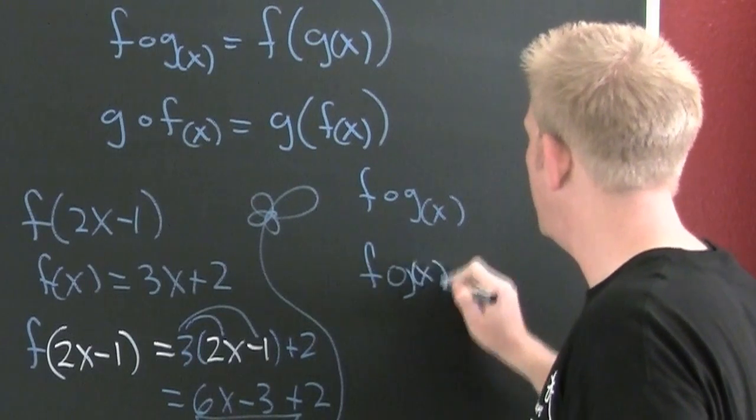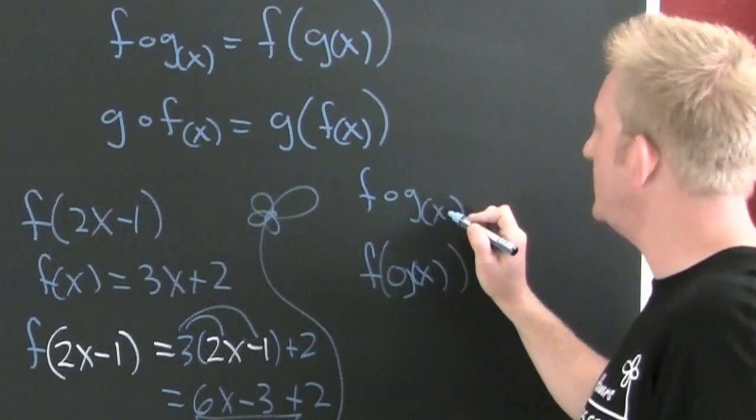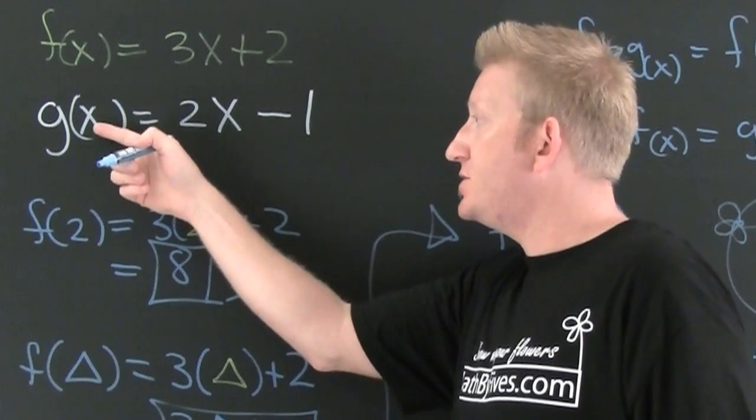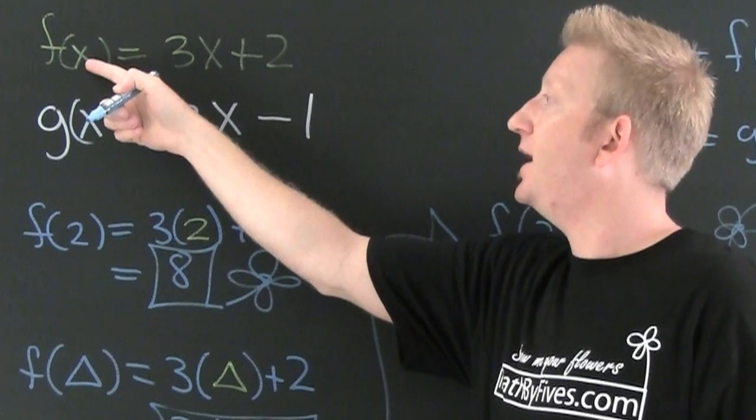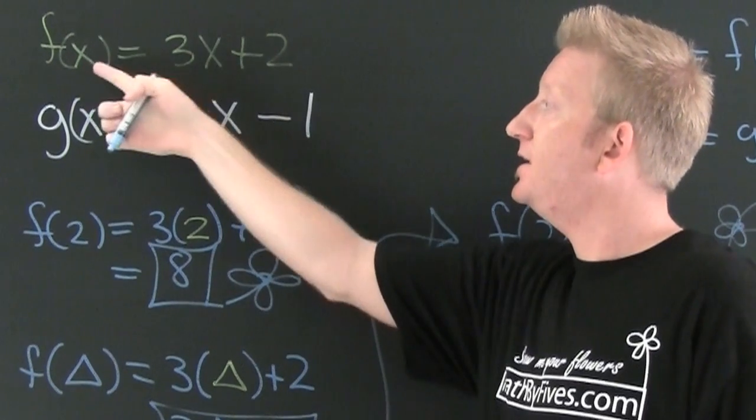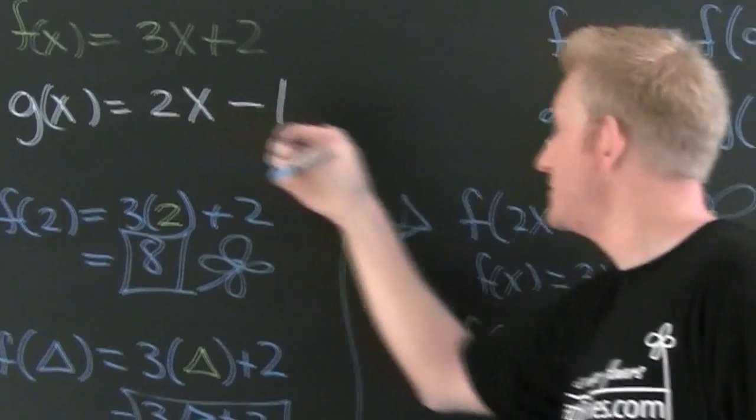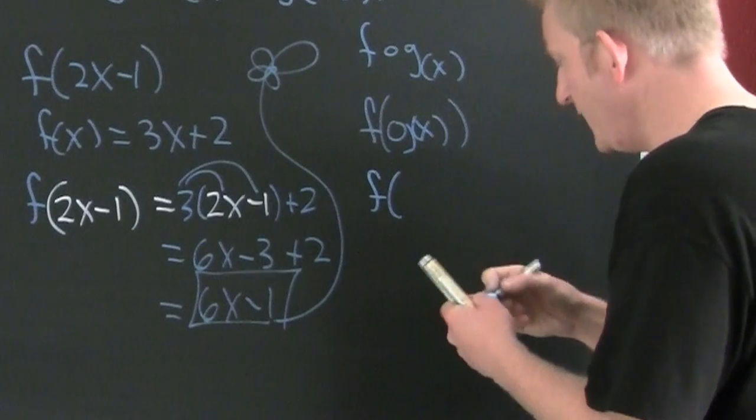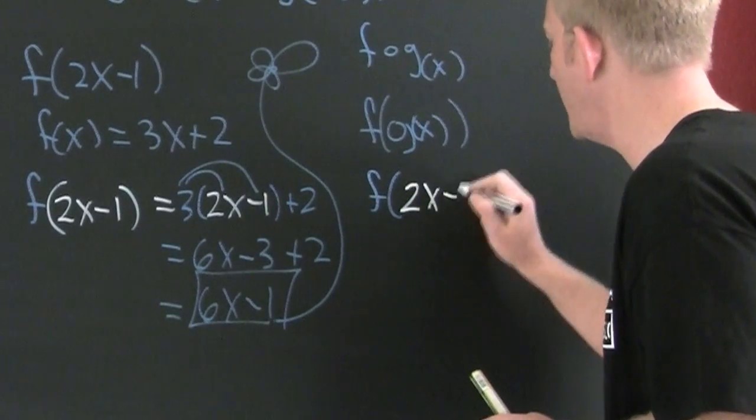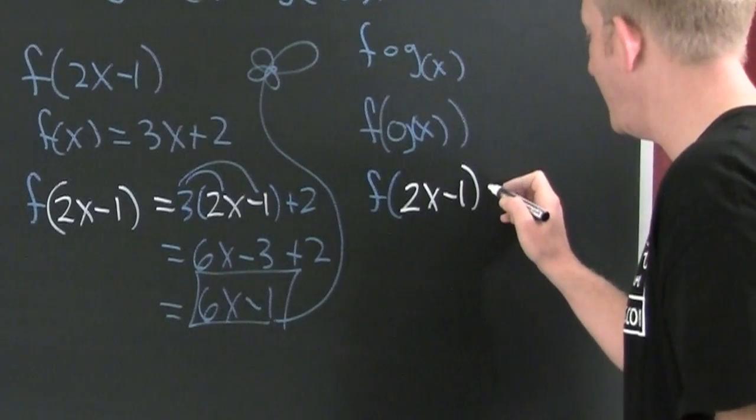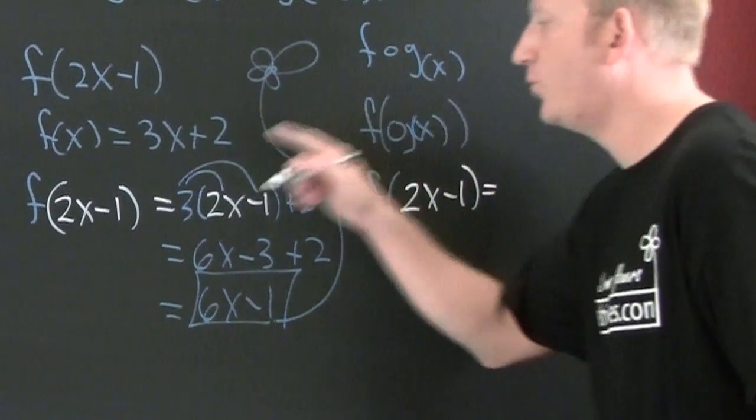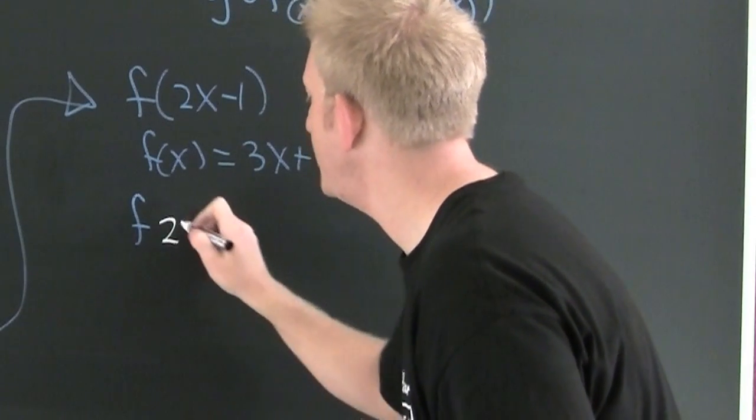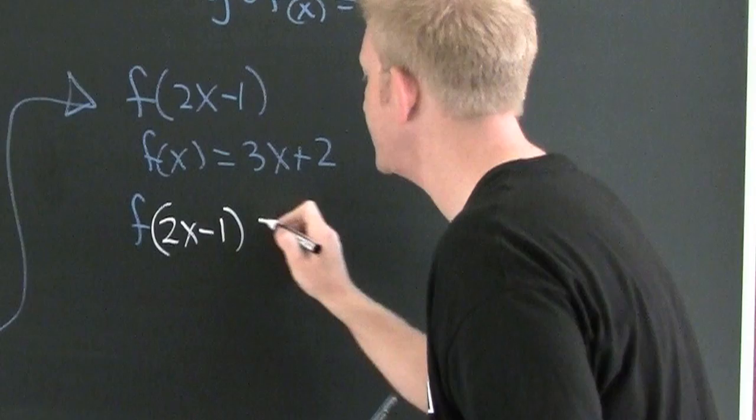f of g of x. Here I'm gonna stick g inside f. I'm gonna take g and put it inside f. That means I'm gonna put 2x minus 1 inside f. So this is f of g, where g was 2x minus 1. And then we'll play it again. f of 2x minus 1, that's gonna be equal to